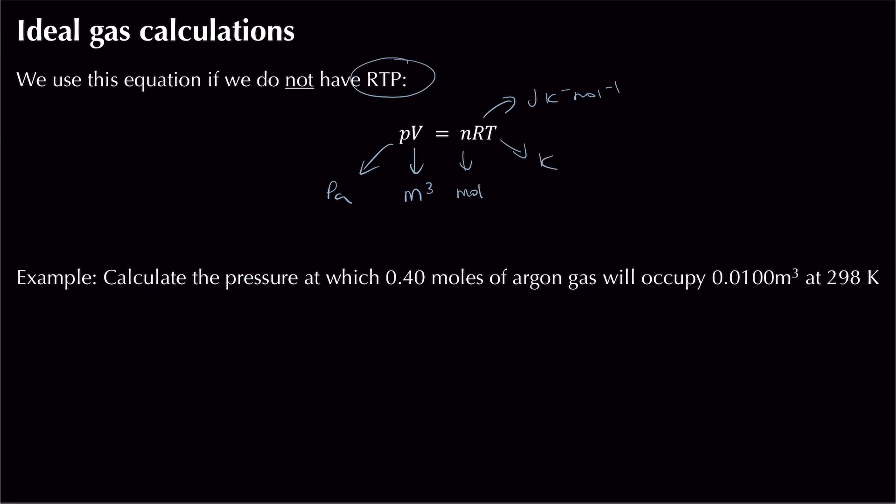How do we rearrange the ideal gas equation to find different values? The equation could be rearranged to find pressure, volume, amount of substance in moles, the gas constant, or temperature. To find pressure, divide both sides by volume: P = nRT/V.